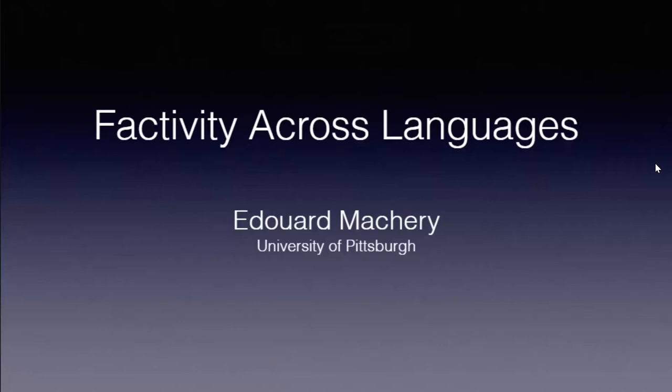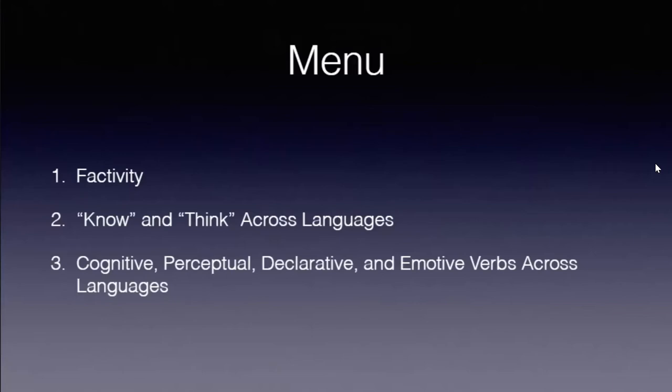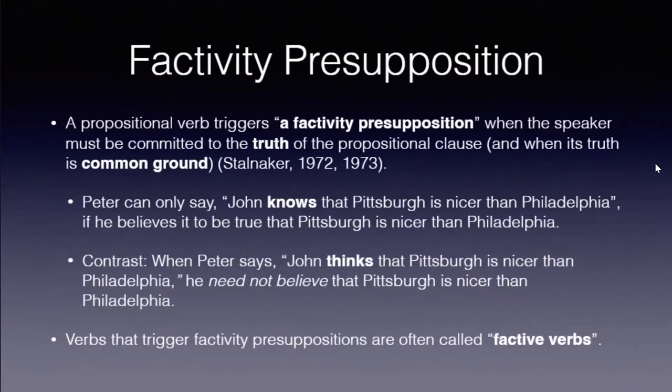This talk is about the phenomenon called factivity in semantics. I'll explain what that means and present results. I'll start with factivity, then give you a first study contrasting knowing and thinking, and then extend the results to a range of other types of predicates. Factivity: there are many ways of defining it, but a common understanding is that a propositional verb — 'know' in English, 'savoir' in French, 'wissen' in German — triggers a factivity presupposition.